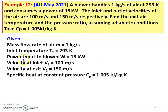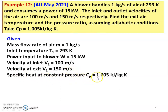Write down the given data. Mass flow rate M = 1 kilogram per second. Inlet temperature T1 = 293 kelvin. Power input to the blower W = 15 kilowatt. Velocity at inlet V1 = 100 meters per second. Velocity at the exit V2 = 150 meters per second. Specific heat at constant pressure Cp = 1.005 kilojoules per kilogram kelvin. These are all the information given.